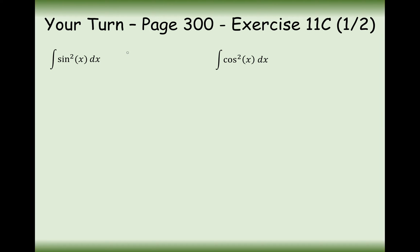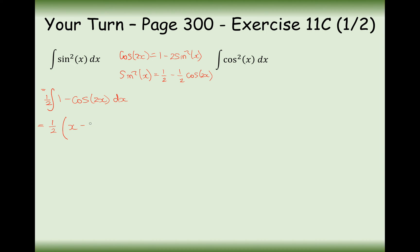We've seen how to integrate sine squared. Cos 2x equals 1 minus 2 sine squared x. Rearranging gives sine squared x equals one half minus one half cos 2x. What we'll integrate is with the half factorised out front: one half times (1 minus cos 2x) dx. This integrates to one half brackets x minus one half sine 2x, because we divide the 2 to the front, plus c.